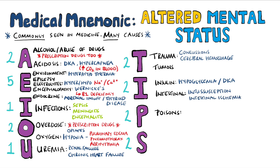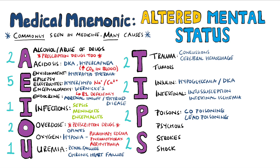P is for poisons like carbon monoxide poisoning or lead poisoning. P is also for psychosis. Finally, we have S to remind us of strokes, but also to remind us of shock.